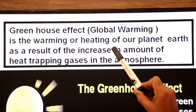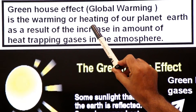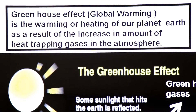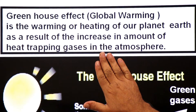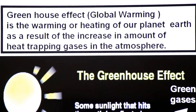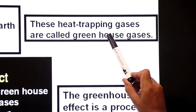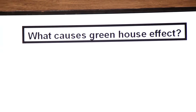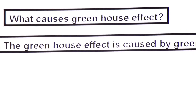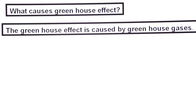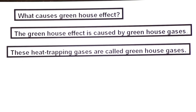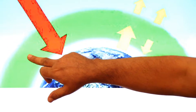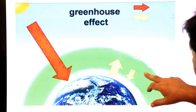Greenhouse effect, also called global warming, is the warming of our planet earth as a result of an increase in the amount of heat-trapping gases in the atmosphere. These heat-trapping gases are called greenhouse gases. The greenhouse effect is caused by greenhouse gases.